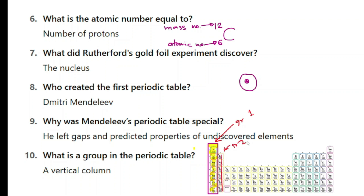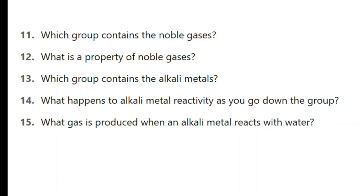You have group 3, group 4, group 5, group 6, group 7, and the final one here is group 0 or you can call it group 8. Each vertical column is called a group.